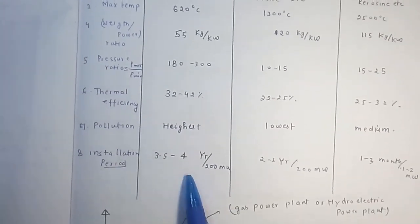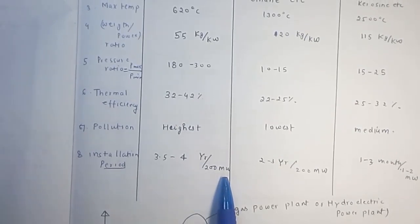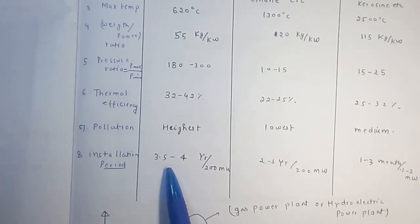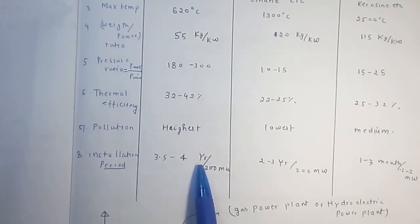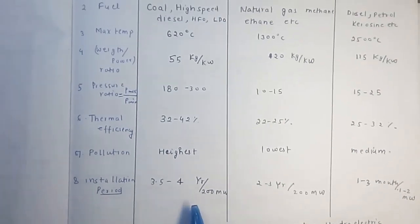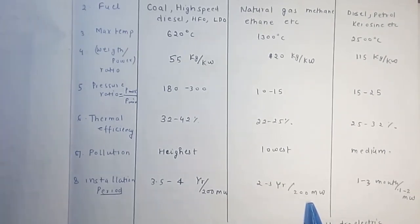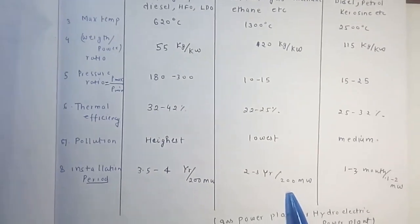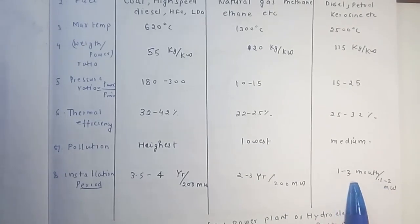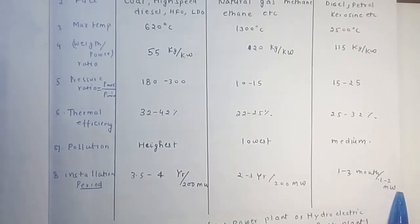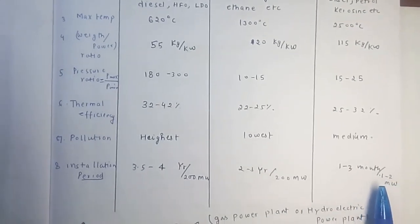Regarding installation period for a 200 megawatt plant: a steam power plant takes approximately 3.5 to 4 years to install, a gas turbine power plant takes approximately 2 to 3 years, and an IC engine power plant takes 1 to 2 years for the same capacity.